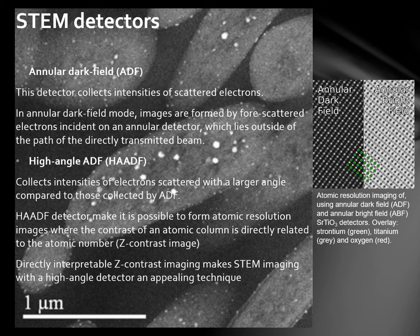ADF detectors collect intensities of scattered electrons. In annular dark field mode, images are formed by scattered electrons incident on an annular detector which lies outside of the path of the directly transmitted beam. High-angle ADF collects intensities of electrons scattered with a larger angle compared to those collected by ADF. HAADF detectors make it possible to form atomic resolution images where the contrast of an atomic column is directly related to the atomic number. Directly interpretable Z-contrast imaging makes STEM imaging with a high-angle detector an appealing technique.